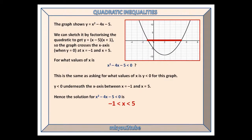For what values of x is x squared minus 4x minus 5 less than 0? This is the same as asking for what values of x is y less than 0 for this graph, and y is less than 0 underneath the x-axis between x equals minus 1 and x equals 5.